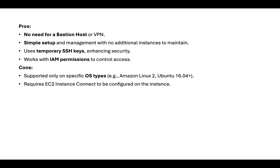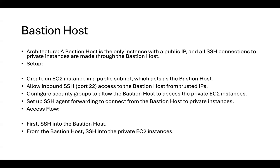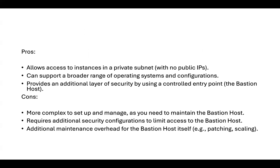Moving on to the bastion host — it's an instance with a public IP, and all SSH connections to private instances are made through it. It acts as a jump server: an EC2 instance in the public subnet called the bastion host. We allow inbound SSH access to the bastion from trusted IPs, configure security groups, and set up SSH forwarding to connect from the bastion to the private instance.